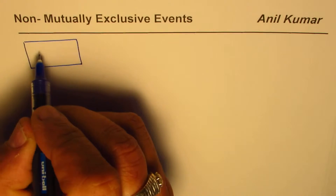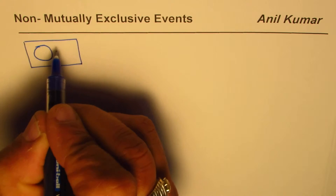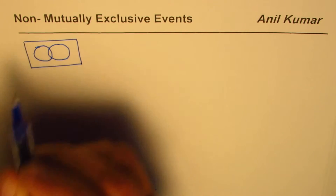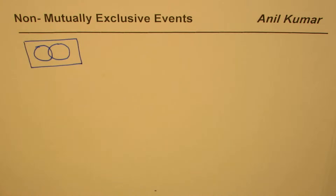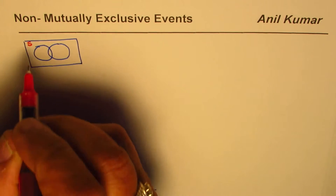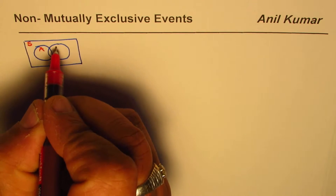I'm Adil Kumar and in this video we will understand the concept of non-mutually exclusive events and find the probability of such events. Let's begin with our sample space. This represents a sample space where we are talking about two events - event A and event B - and these events overlap. So we have a sample space where we have two overlapping events: event A and event B.